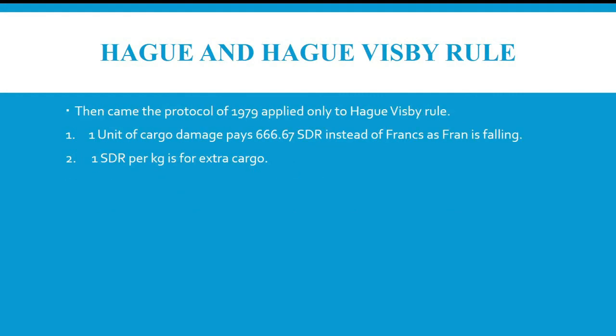Then came the Protocol of 1979, applied only to the Hague-Visby Rules. One unit of cargo damage pays 666.67 SDR instead of francs, as the franc was falling. The second provision is 2 SDR per kg for cargo.